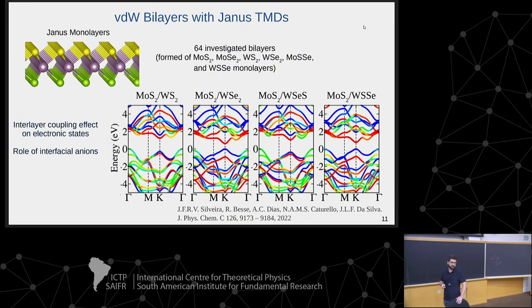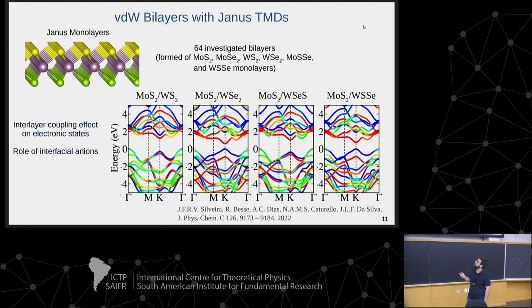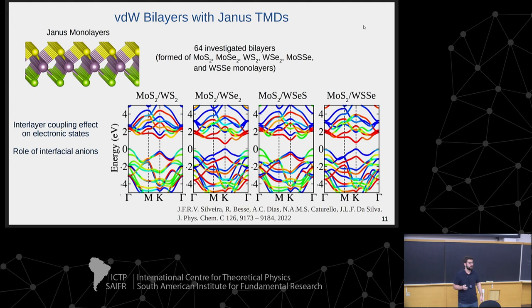Finally, we investigated Van der Waals bilayers with Janus transition metal dichalcogenides. Janus TMDs are monolayers where one chalcogen layer is replaced by a different chalcogen — for instance, sulfur on top and selenium on the bottom — creating an intrinsic out-of-plane dipole. We examined electronic and optical properties of a library of bilayers combining these Janus monolayers. We see the same hybridization mechanisms described earlier, and importantly, the identity of the chalcogen atoms at the interface plays an important role in the hybridization effect.